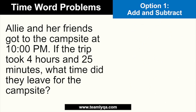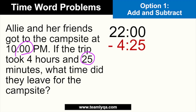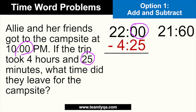Now, what about this? Ali and her friends got to the campsite at 10 PM. If the trip took 4 hours and 25 minutes, what time did they leave? The previous question was a little easier because the minutes were zero. If I write this out: 10 PM in military time is 22:00, and I need to subtract 4:25. The problem here is zero minus 25 — you can't do that. So what you do is turn 22:00 into 21:60. I borrowed one hour from the 22, making it 21, and converted that 1 hour into 60 minutes. So 22:00 and 21:60 are equivalent.